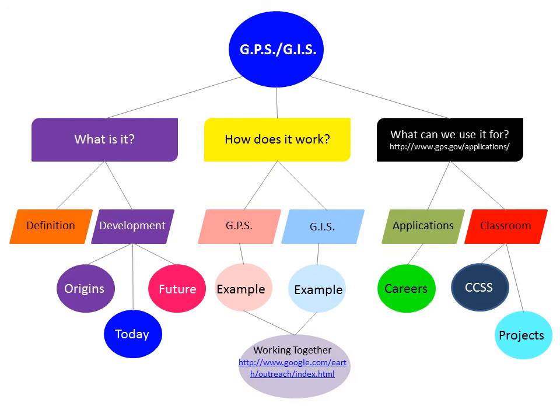Under GPS I chose light pink to give examples of different GPS systems, and light blue to give examples of different GIS systems. When these two colors come together they make purple, so I chose light purple to show how GPS and GIS work together. I also included a URL here — I learned that you can actually import your own GPS data into Google Earth and use GIS in that process to help businesses or in class projects.